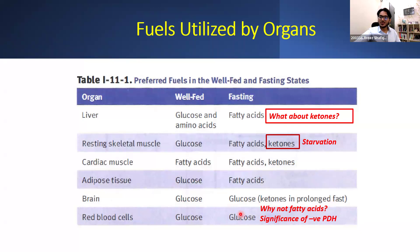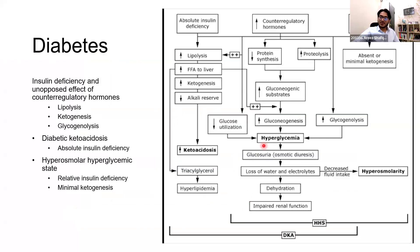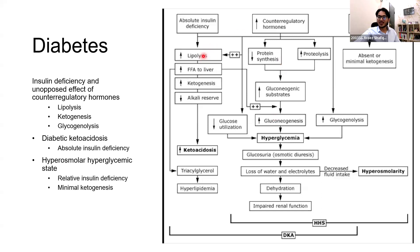If you understood all the metabolic pathways discussed, then it should be easy to understand what happens in diabetes. In type 1 diabetes, you have absolute insulin deficiency, and so a relative excess of counter-regulatory hormones — excess epinephrine, glucagon, and cortisol. This leads to unopposed lipolysis, increased delivery of fatty acids to the liver, increased production of ketone bodies, increased triglycerides — hyperlipidemia — and hyperglycemia because glucose isn't being utilized. Elevated keto acids cause acidosis. These form the triad of diabetic ketoacidosis, which is a complication of type 1 diabetes.